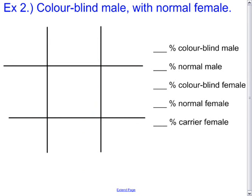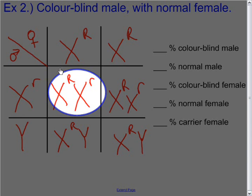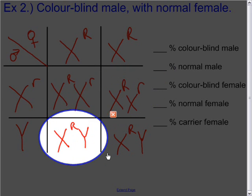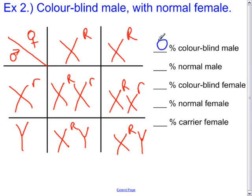For the next example, do a Punnett square of a colorblind male with a normal female who is neither a carrier nor colorblind, then fill in the percents. The Punnett square is set up with a colorblind male and a normal vision female. The possible offspring are: a carrier female, another carrier female, a normal vision male, and another normal vision male. Percent colorblind male: 0%; normal male: 2 out of 4, so 50%; colorblind female: 0%; normal female: 0%; carrier female: 50%.